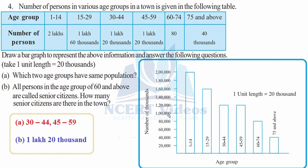This is your bar graph. The vertical axis will have the number of persons in thousands, and the horizontal axis will have the age groups. We take one unit length equal to 20,000 because the population numbers are high, so each interval on the vertical axis represents 20,000. For the age group 1 to 14, we have 2 lakhs, and for 15 to 29 we have 1 lakh 60,000. The rest of the bars are drawn similarly.